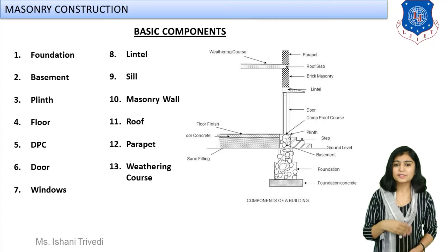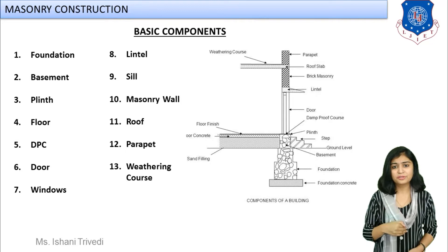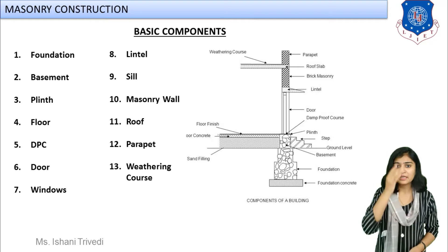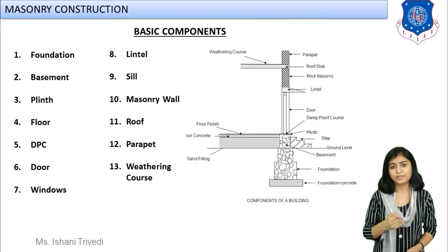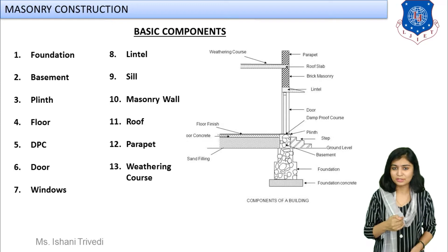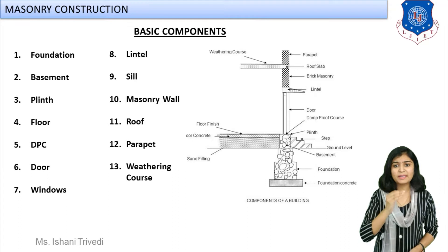Next we have DPC — Damp Proof Course — which is provided just above the plinth level for damp proofing of the ground floor. Then doors and windows, lintel and sill as already discussed. A masonry wall is constructed using bricks, as you can see in the cross-sectional image. Then we have the roof and the parapet wall — generally around one to one and a half meters high — provided for safety purposes. The roof is your terrace.